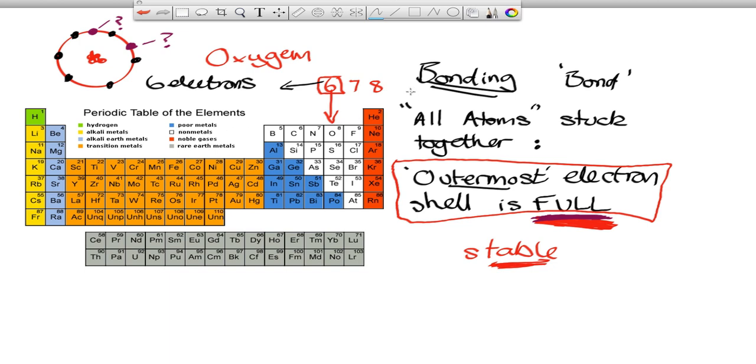So all atoms that stick together have full outer shells, and they don't start off with full outer shells. So from somewhere they're going to have to borrow, beg, or steal electrons in order to bond.